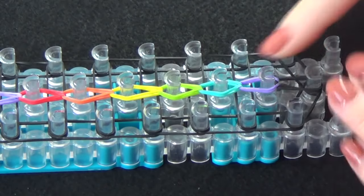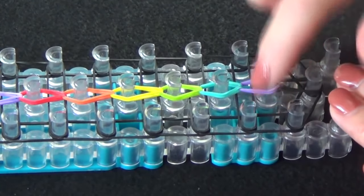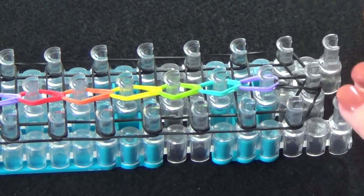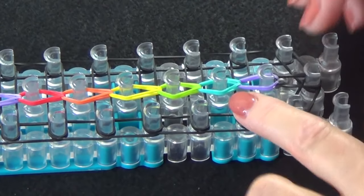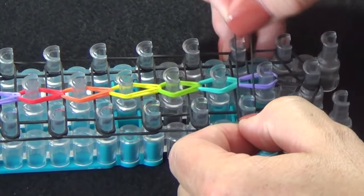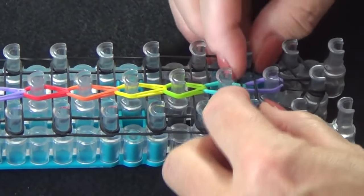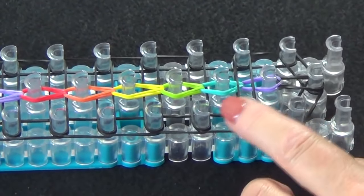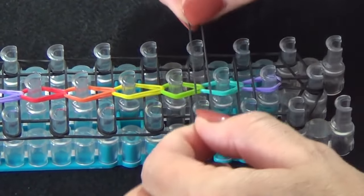you'll place black bands over each of the previous black bands that you've laid across the loom. Starting from the center pin, or the second pin, you'll place a band just over the one you had placed before. Do this again here.